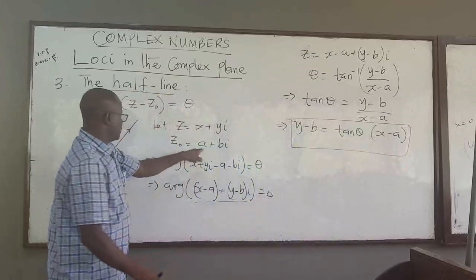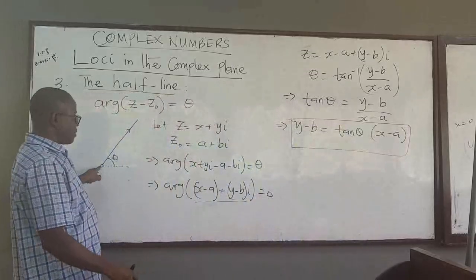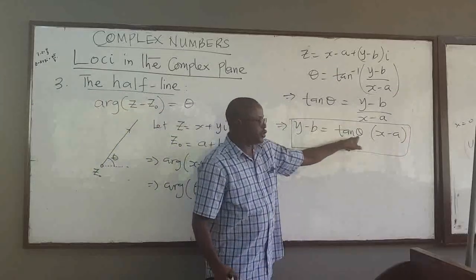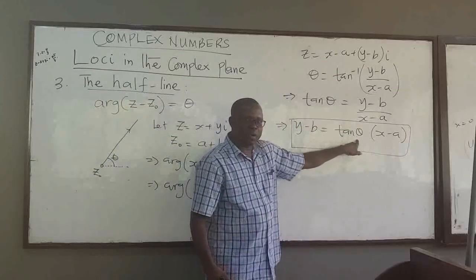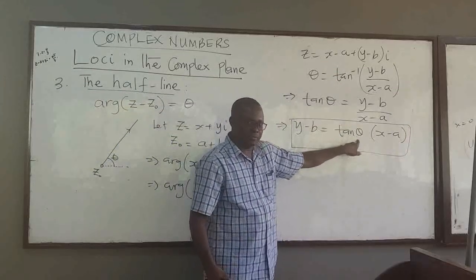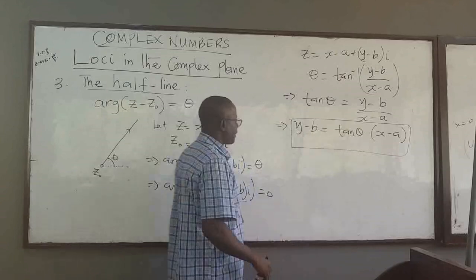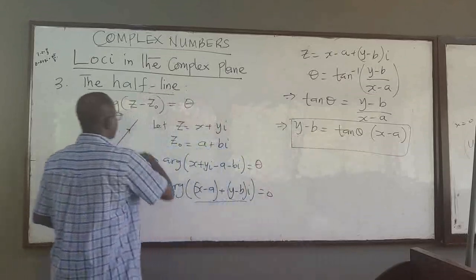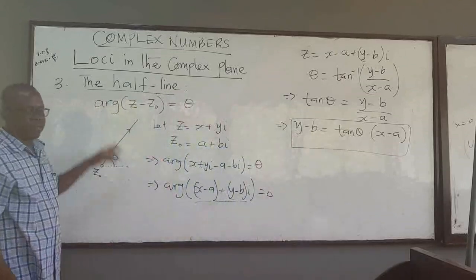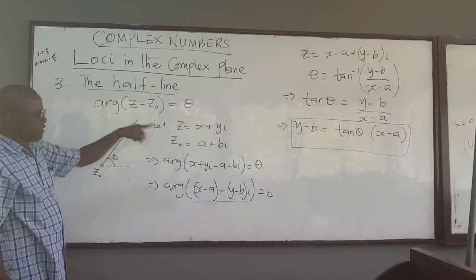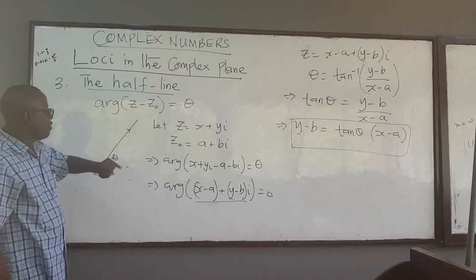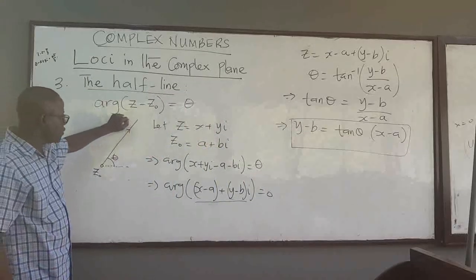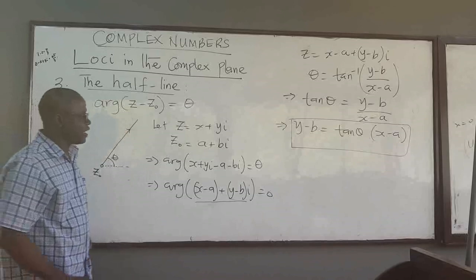This is the equation of a line from the point (a, b), where (a, b) is z naught, and the line makes a slope of tan(theta) with the positive x-axis. This equation is the Cartesian form of the half line equation.